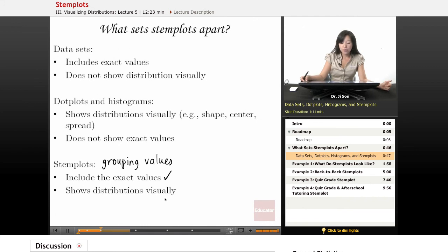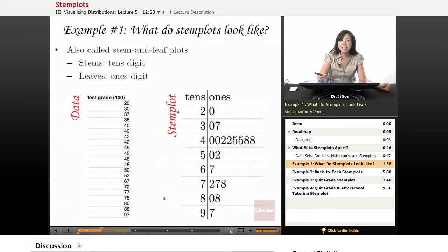So what do stem plots actually look like? Here's our first example. They're also called stem and leaf plots. The stems are really the tens digit, and the leaves are actually the ones digit of your data. So let's take this class. Let's say it's a physics class. And here are the test grades for all these people. And I've put it already in order from the least to the greatest.